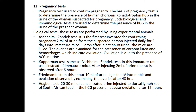Pregnancy test is used to confirm pregnancy. The basis of the pregnancy test is determination of the presence of human chorionic gonadotropin (HCG) in the urine of the woman suspected to be pregnant. Both biological and immunological tests are used to determine the presence of HCG.